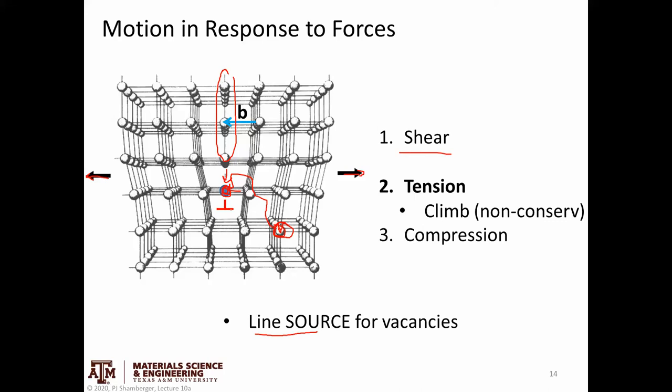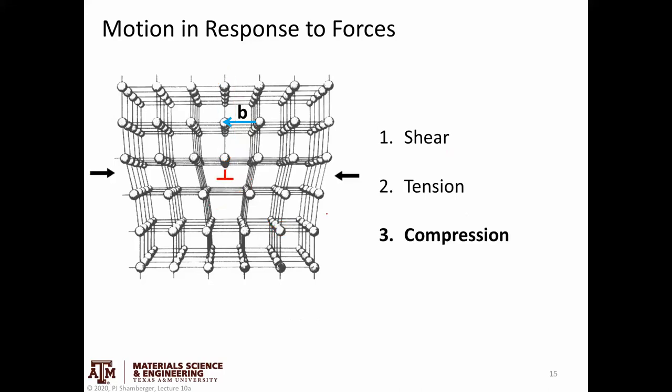The main takeaway: dislocations like to move by slip versus climb. Climb is generally non-conservative. What separates climb is that the dislocation moves on a plane that no longer contains both the Burgers vector and the tangent vector.